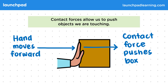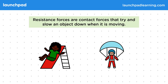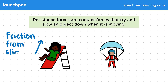Resistance forces are contact forces that try and slow an object down when it's moving. For example, when someone goes down a slide, there's friction from the slide as the person moves across the surface. Friction happens here because neither surface is entirely flat, so the particles rub against each other as they move past.